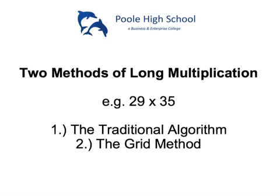We're going to look at how we do long multiplication, and today we're going to look at two methods. One is what I'm going to call the traditional algorithm, and the second method is what people generally call the grid method. For both these examples, I'm going to do the sum 29 times 35.